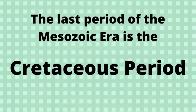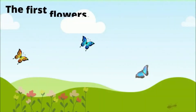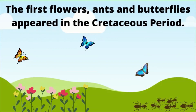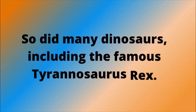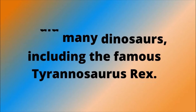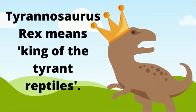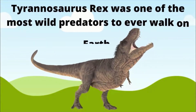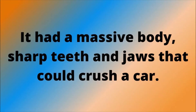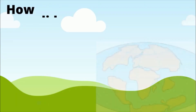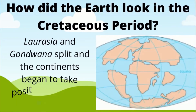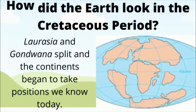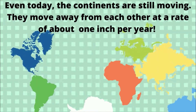The last period of the Mesozoic era is the Cretaceous period. The first flowers, ants, and butterflies appeared in the Cretaceous period, as did many dinosaurs, including the famous Tyrannosaurus rex. Tyrannosaurus rex means 'king of the tyrant reptiles,' and was one of the most fearsome predators to ever walk on Earth, with a massive body and sharp teeth and jaws that could crush a car. During the Cretaceous, Eurasia and Gondwana split and the continents began to take the positions we know today — and they are still moving, at about 1 inch per year.